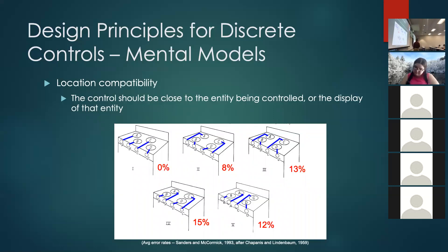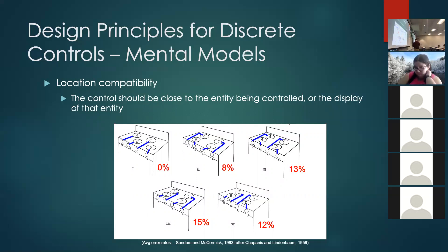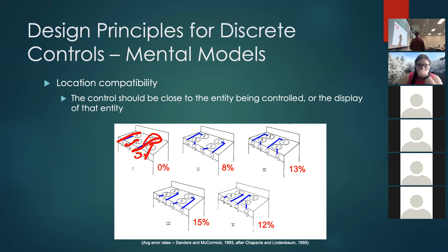Stove top designs are a good example of the need for compatibility between controls and the mechanism they're controlling. This study shows five different stove top configurations — which knob controls which burner — and the error rates. When you've got a linear mapping, nobody makes mistakes. Even if it's just that outside controls the back burner, that's a logical rule easy to follow. But unless you're devoting mental resources to it, you won't be able to quickly and accurately turn on the correct burner.